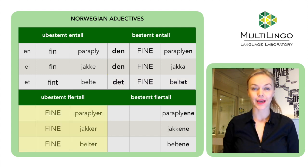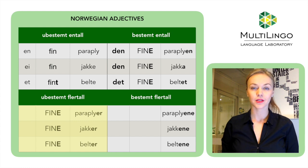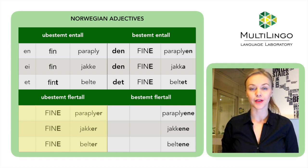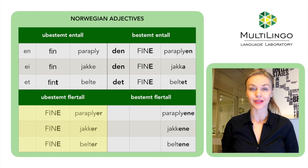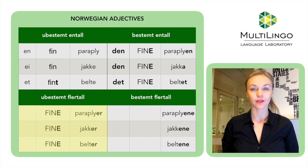When I want to say 'nice umbrellas' or 'nice jackets,' I'll simply say 'fine paraplyer,' 'fine jakker.' Here, no article is needed. Just remember to put an -e ending on the adjective and -er on the nouns.